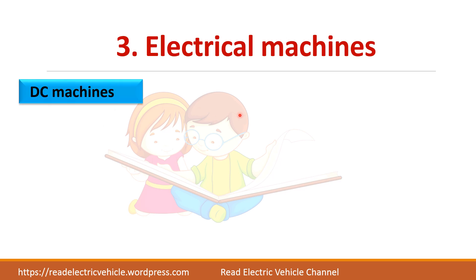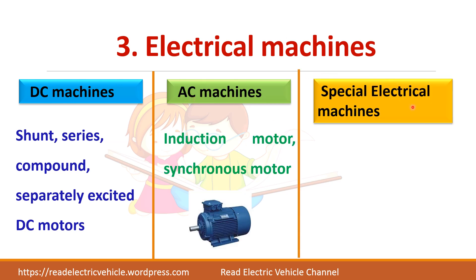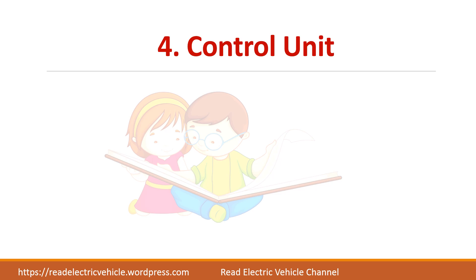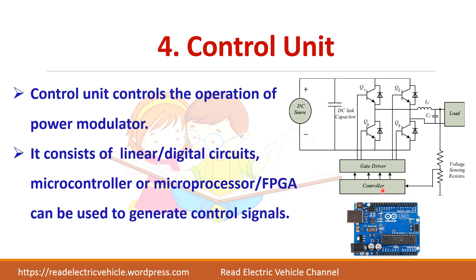Different electrical machines can be used: DC machines, AC machines, or special electrical machines, which are nowadays widely used. The important part of the drive is the control unit, which controls the operation of the power modulator. For example, an inverter feeds the load and we sense the voltage, which is given to the controller. The controller generates gate pulses for the converter, deciding the output of the power converter. This controller can be a microcontroller, microprocessor, or FPGA.